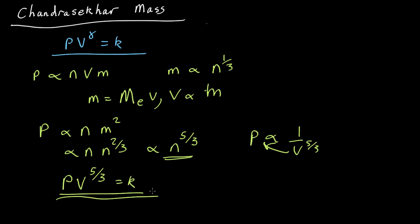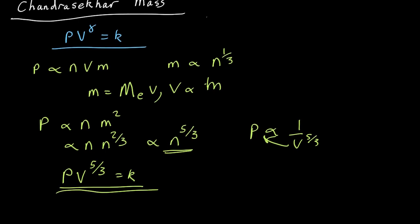Our criteria for stability was that this index gamma be more than four-thirds, and five-thirds is more than four-thirds. So that's telling us that a white dwarf is stable. If you squash it, the pressure increases by more than the gravity, pushes back out, and it all stays where it is.